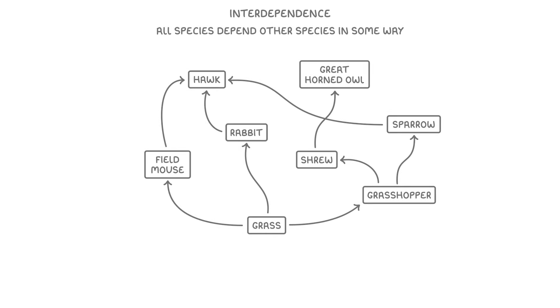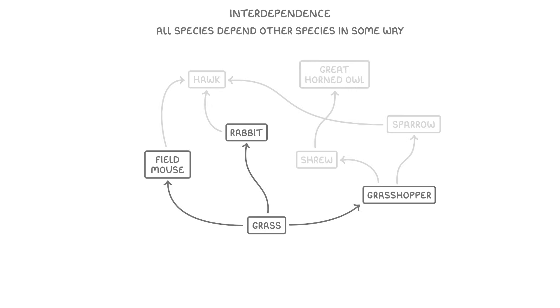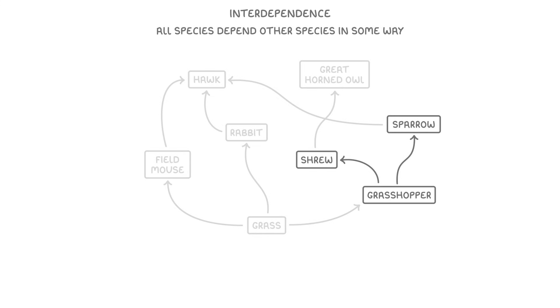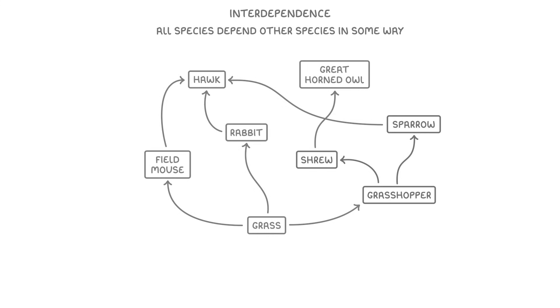The last key term we need to cover is interdependence, which is the idea that all species depend on other species in some way. We can see how this works with a food web, which shows the feeding relationships within a community. So here, we can see that mice, rabbits, and grasshoppers all feed on the grass, and then the shrews and sparrows feed on the grasshoppers, and so on.